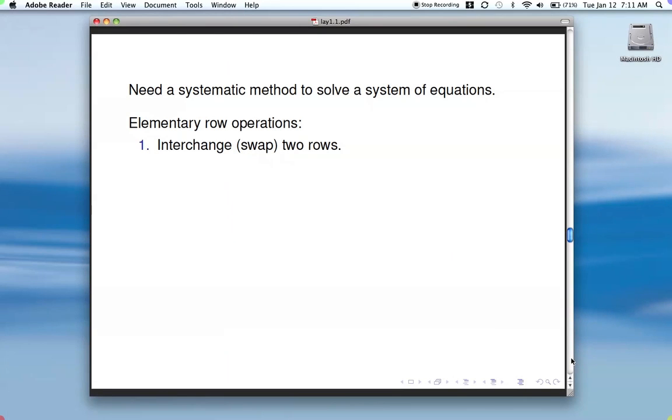And here we'll talk about our elementary row operations. Number one is to interchange or swap two rows. So that, since a row in a matrix represents an equation, that just means we're reordering the equations, which, as you know, has no effect on the solution. We could also multiply all the entries in a particular row by a non-zero constant. No, you can't multiply by zero because that would be essentially throwing out that equation, and that wouldn't work. But you can multiply by any non-zero constant.